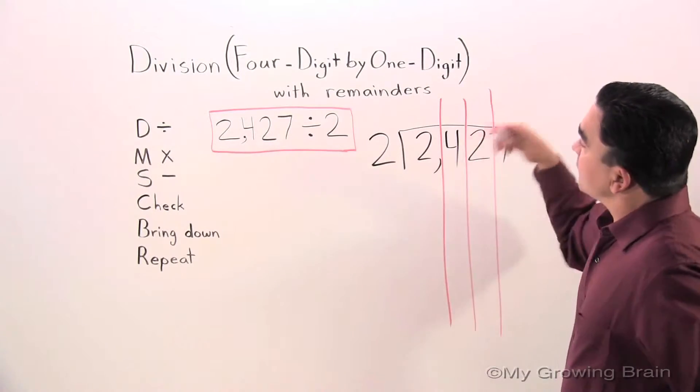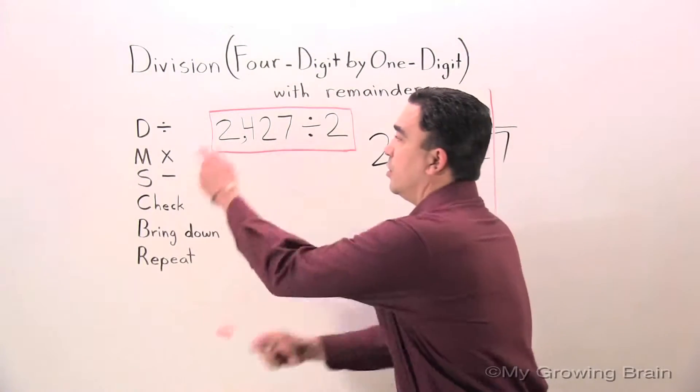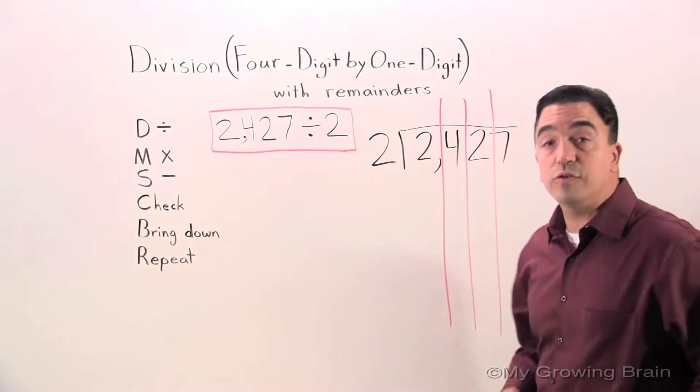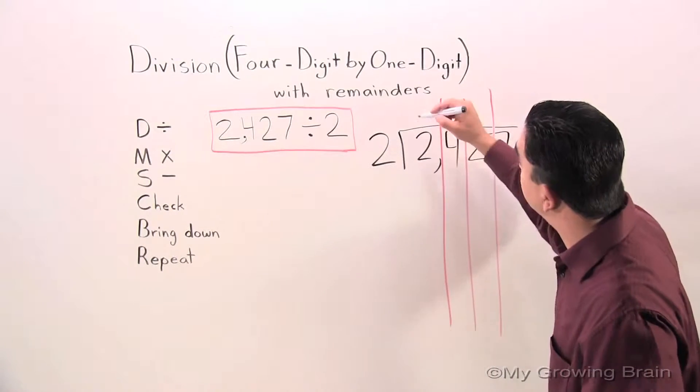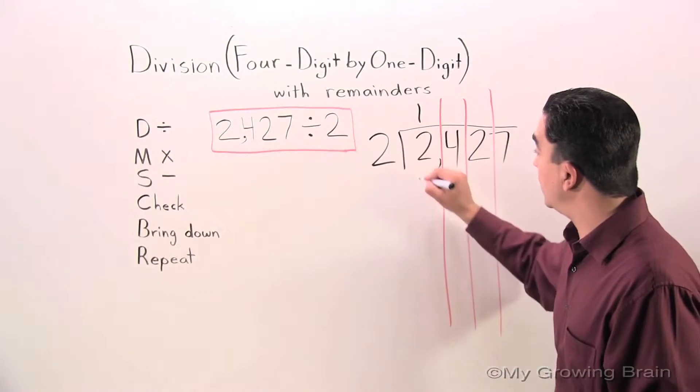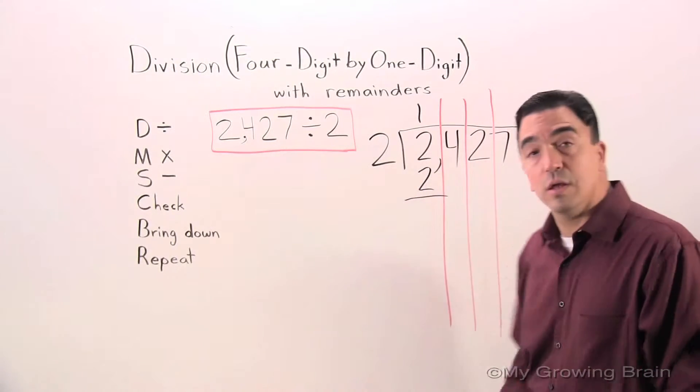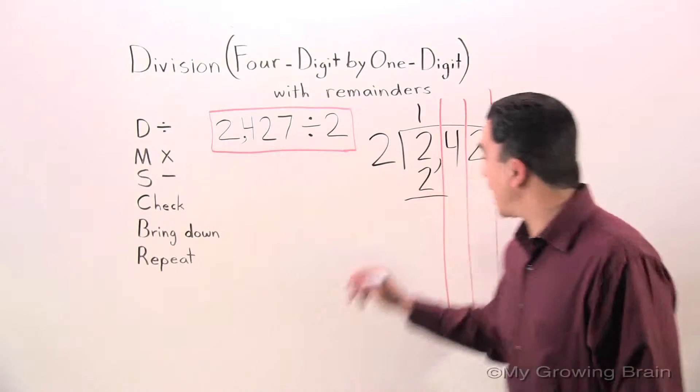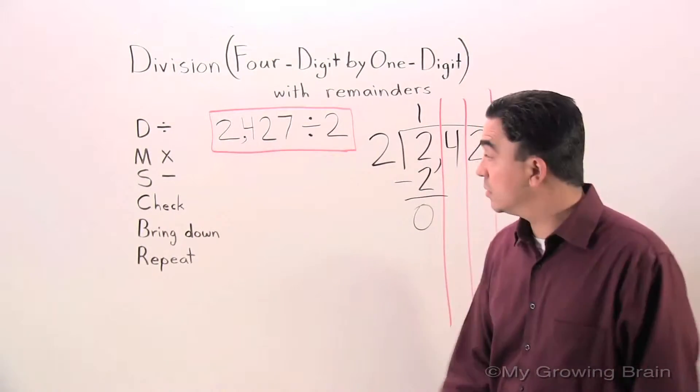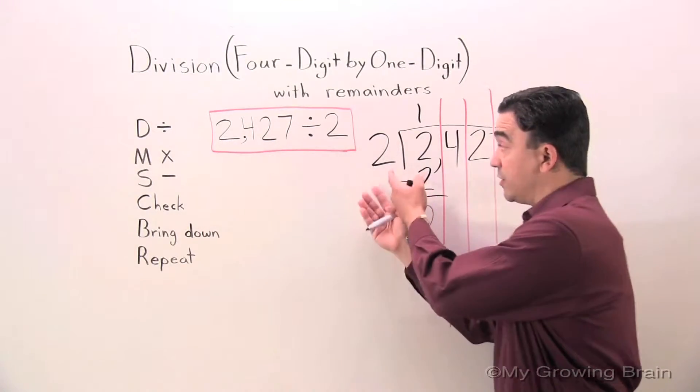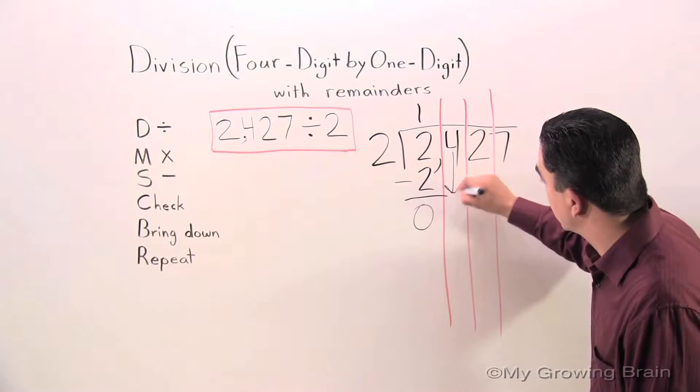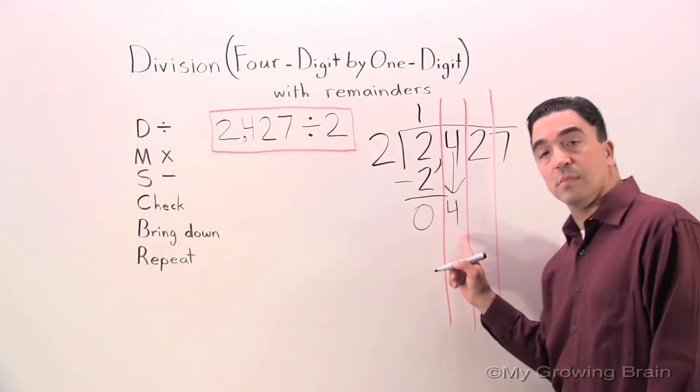Alright, here we go. First thing I'm going to do is divide 2 into 2. 2 divided by 2, which is 1. Multiply. 2 times 1? 2. Subtract. 2 minus 2? 0. Check. That is smaller than the divisor. Keep on going. Bring down. 4.